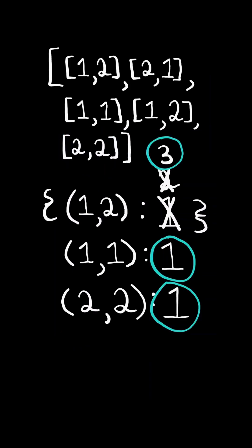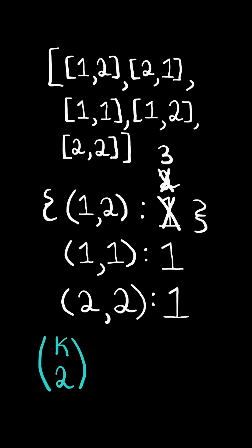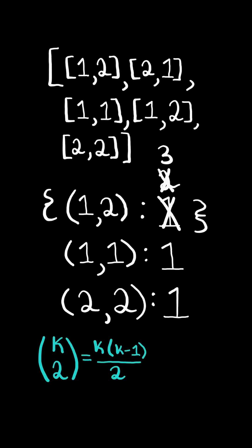We add a tuple with the minimum and maximum to the dictionary and increment its frequency. Now at the end, we want to iterate through all the values in the dictionary and see how many equivalent pairs we can make. If a domino appears k times, then the number of valid pairs we can make is k choose 2, which is equal to k times (k minus 1) divided by 2.